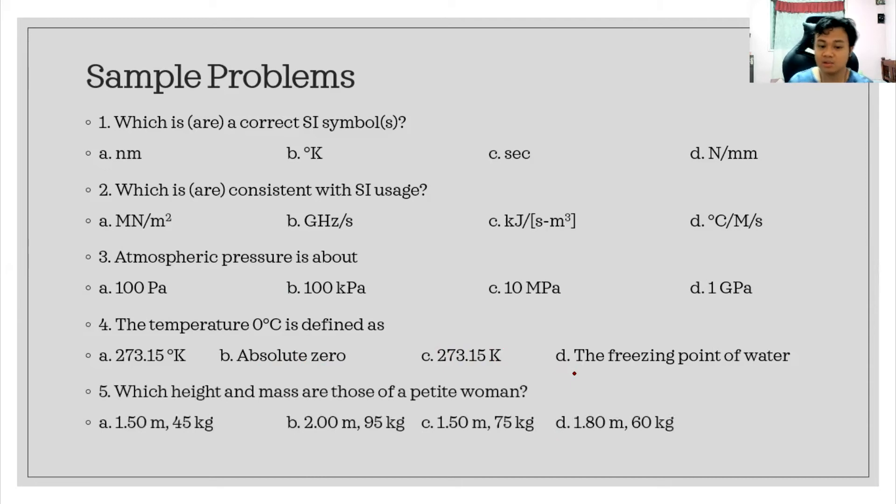And lastly, which height and mass are those of a petite woman? 1.5 meters, 45 kilograms. Letter B, 2 meters and 95 kilograms. 1.5 meter and 75 kilograms. For letter D, 1.8 meters and 60 kilograms. I'll give you 10 seconds to answer, or pause this video for you to check the slides that I have presented to you before and then go back.